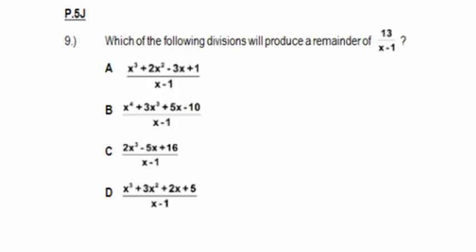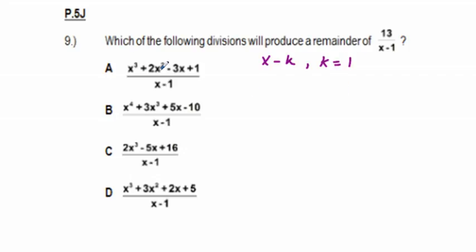Problem 9: which of the following divisions will produce a remainder of 13 over x - 1? All answer choices have a divisor of x - 1. You can use the remainder theorem: if the divisor is x - k, substitute k into the polynomial. Here k = 1, so we substitute x = 1 into each candidate dividend to find which gives 13.